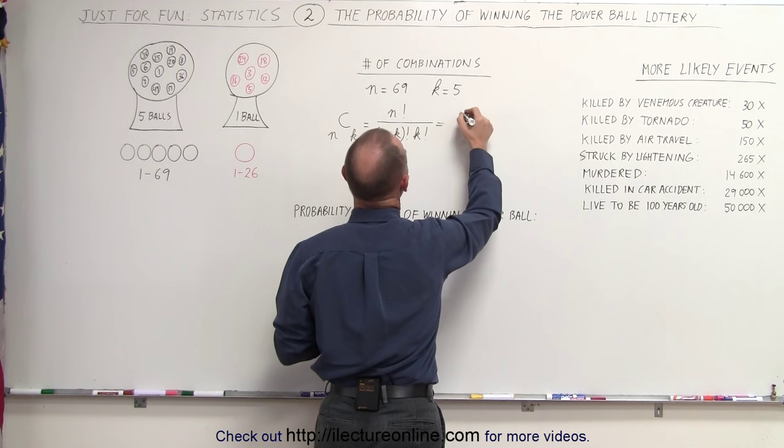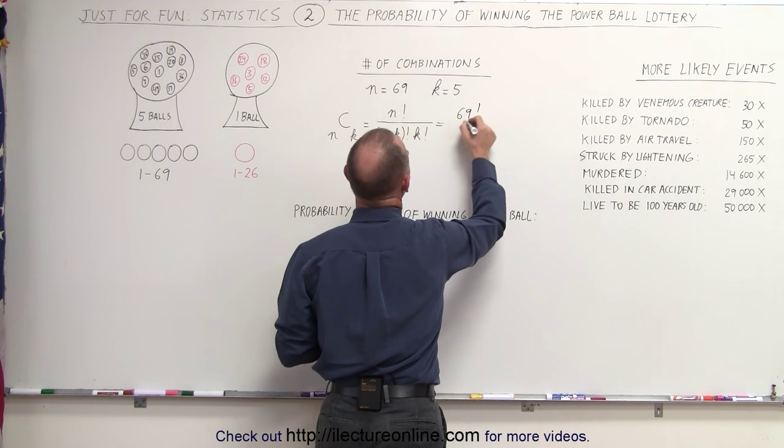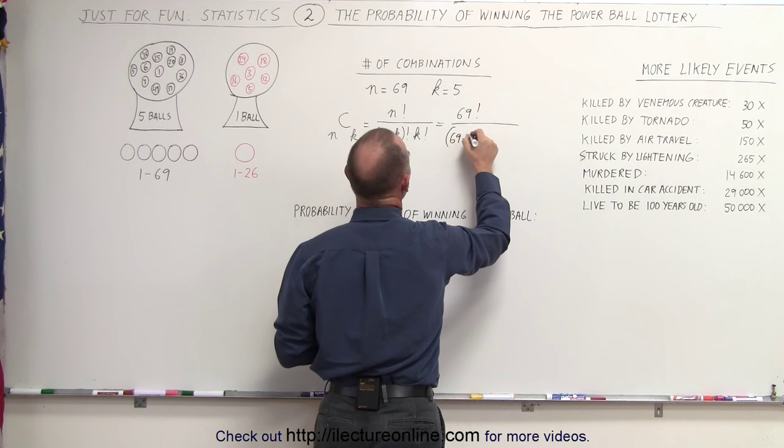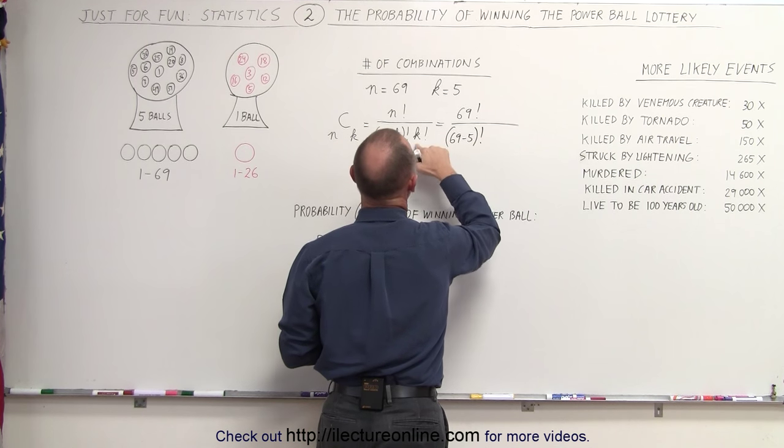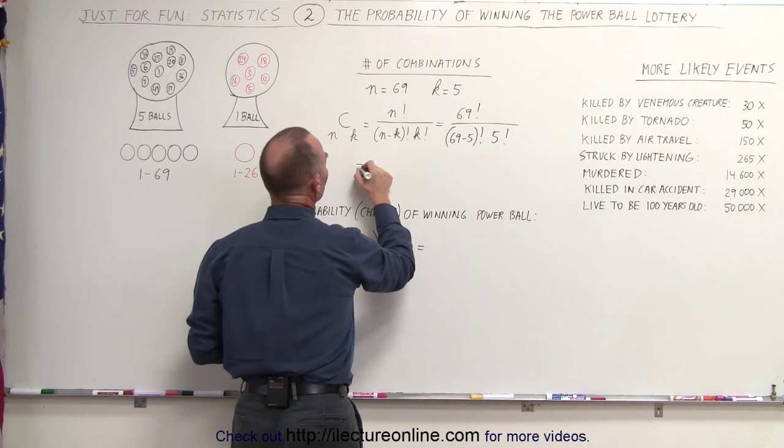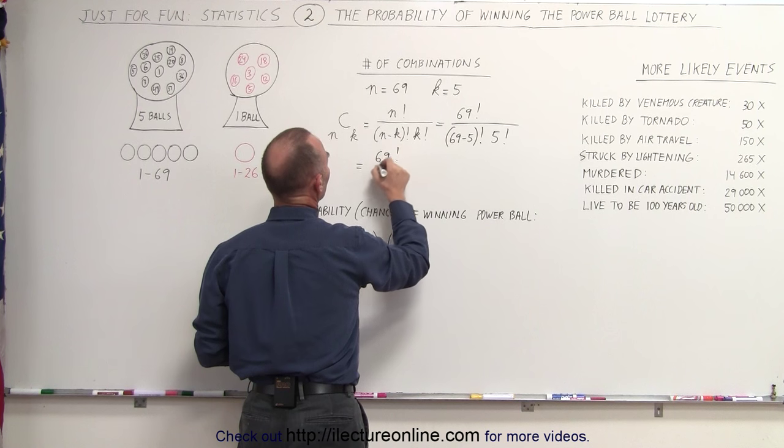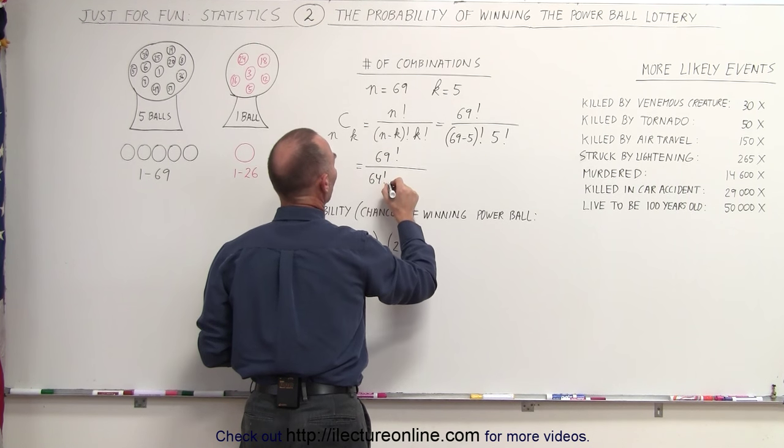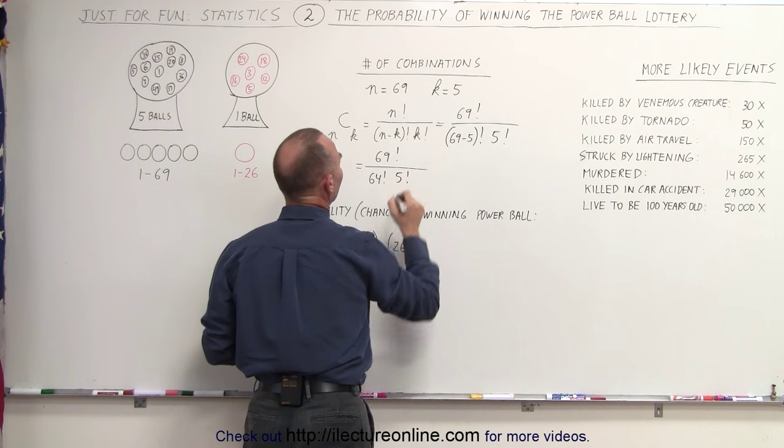n factorial, n being the number of balls, that is 69 factorial, divided by (n minus k) factorial, that's (69 minus 5) factorial, times k factorial, which is 5 factorial. That becomes equal to 69 factorial divided by 64 factorial divided by 5 factorial.